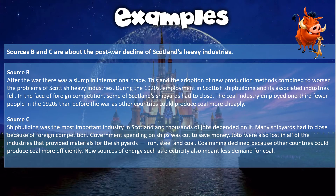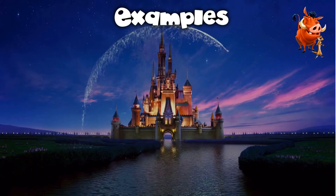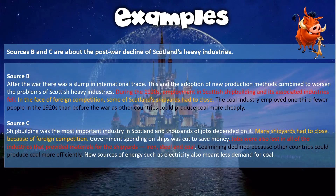Source C says: 'Shipbuilding was the most important industry in Scotland and thousands of jobs depended on it. Many shipyards had to close because of foreign competition. Government spending on ships was cut to save money. Jobs were also lost in all of the industries that provided materials for the shipyards — iron, steel and coal. Coal mining declined because other countries could produce coal more efficiently. New sources of energy such as electricity also meant less demand for coal.' When answering this in the exam, it's good to use highlighters to identify points that agree or disagree.